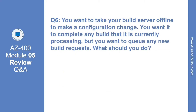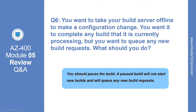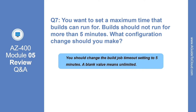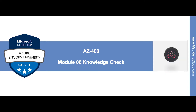Question 6: you want to take your build server offline to make a configuration change, and you want it to complete any build currently processing but queue any new build requests. What should you do? The correct answer is you should pause the build. A paused build will not start new builds and will queue any new build request. Question 7: you want to set a maximum time that builds can run for — no more than 5 minutes. What configuration change should you make? You should change the build job timeout setting to 5 minutes. A blank value means unlimited.